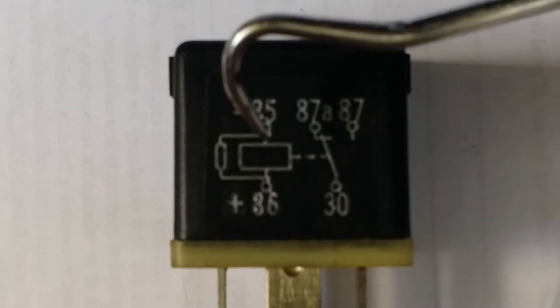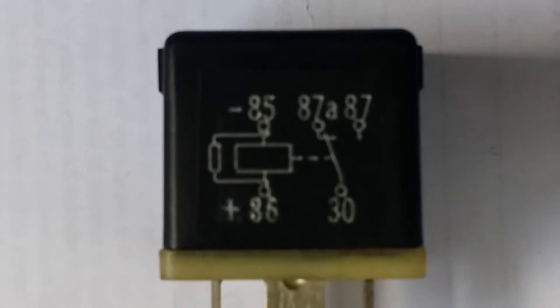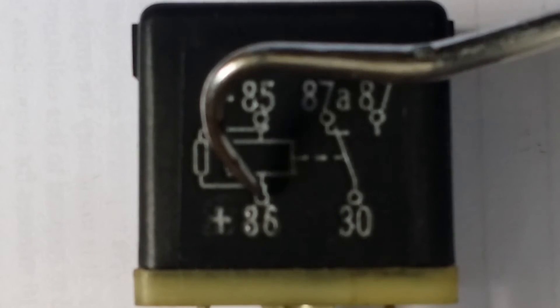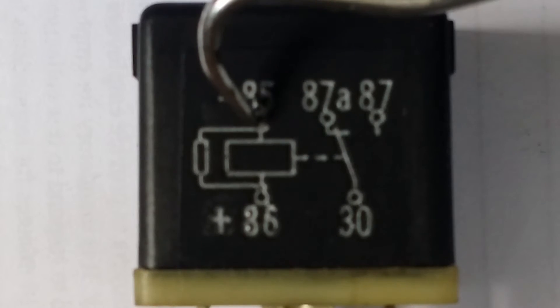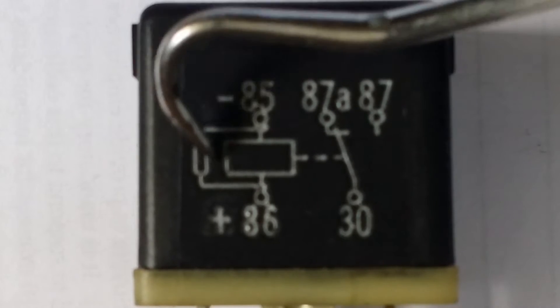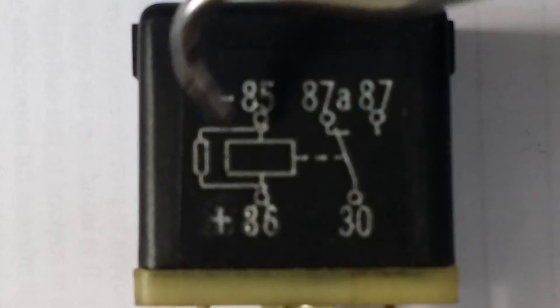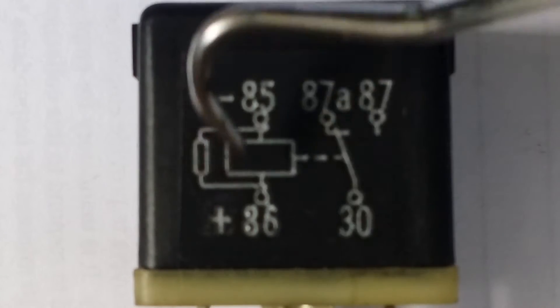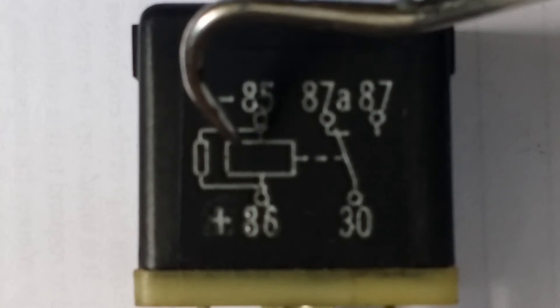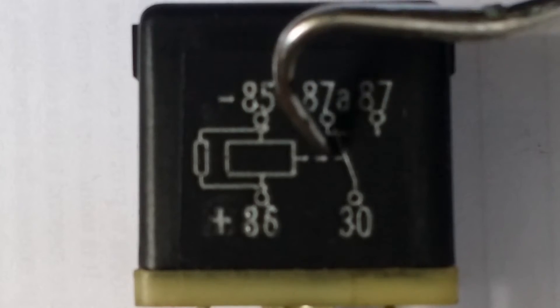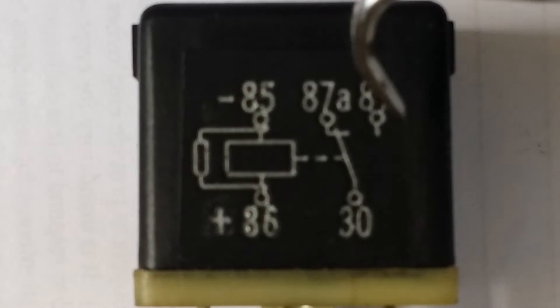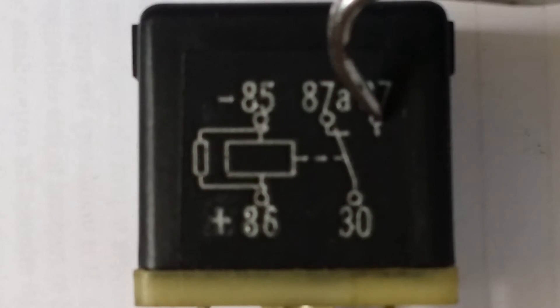What you're going to see is 86 and 85. You'll see this line going through it like this - that represents a coil. A coil that energizes when you put a positive here and a negative here. When you energize these two, that coil pulls the armature in. You see that little line going there? That's representing an armature, and it's going to push that over to 87.